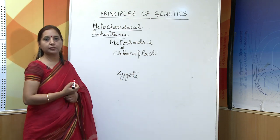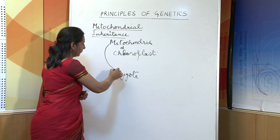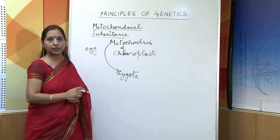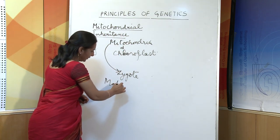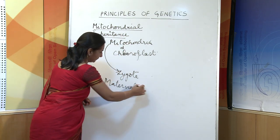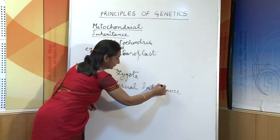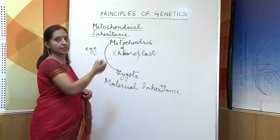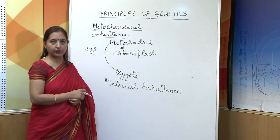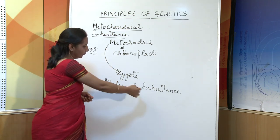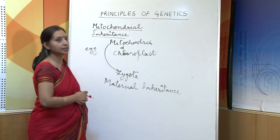The zygote gets the chloroplast and the mitochondria from the egg, that is from the mother's body. Therefore, the inheritance is also called maternal inheritance. Any defective gene present in the mitochondria can give rise to a defect in the individual through the egg of the mother, and therefore it is called maternal inheritance.